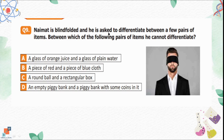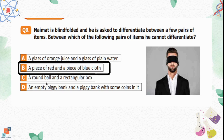Question number 9: Nemeth is blindfolded and asked to differentiate between a few pairs of items. Between which pair can he NOT differentiate? Option A is a glass of orange juice and a glass of plain water — he can taste them to tell the difference. Option B is a piece of red cloth and a piece of blue cloth — blindfolded, he cannot see the colors, so option B is correct. Option C is a round ball and a rectangular box — he can feel the shapes. Option D is an empty piggy bank and one with coins — he can shake them. Option B is the only correct option.